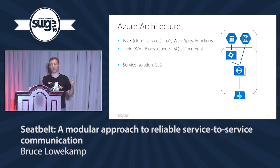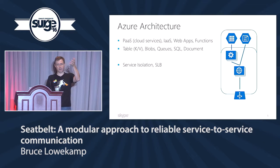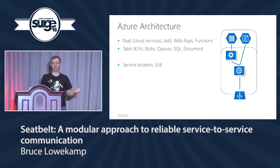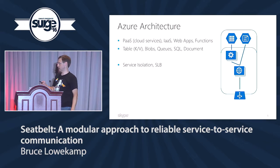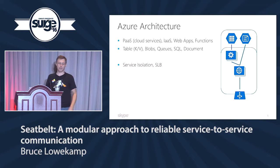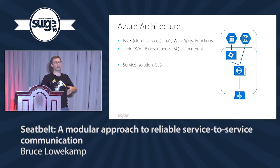Azure's been around for several years and is the number two cloud service provider. It offers a wide range of functionality: platform as a service — now called cloud services — infrastructure as a service, web apps, and Azure functions. Azure Functions and AWS Lambda are pretty equivalent. When we started, the platform as a service was the primary computing paradigm, with web roles, worker roles, and storage accessed separately, behind a software load balancer handling all incoming traffic.